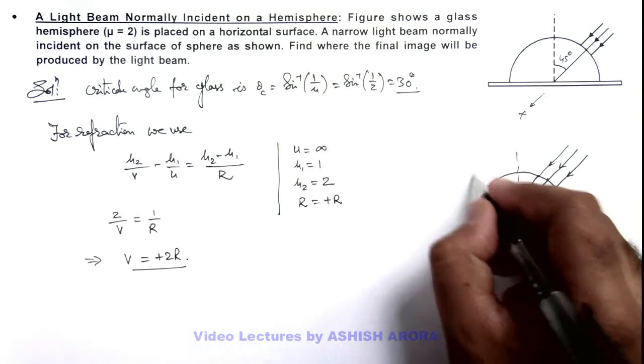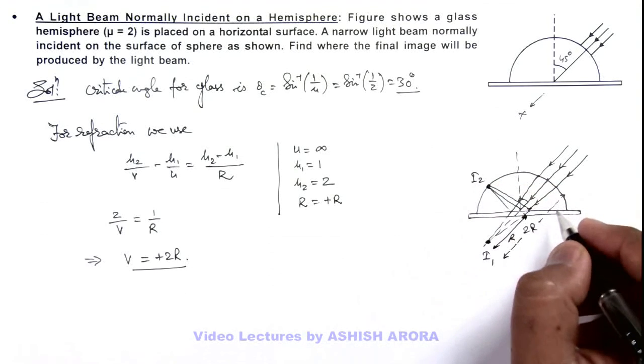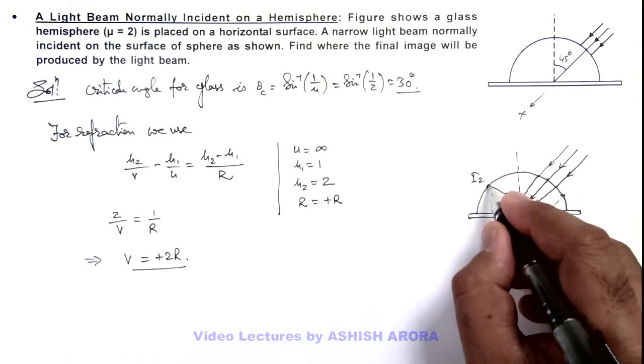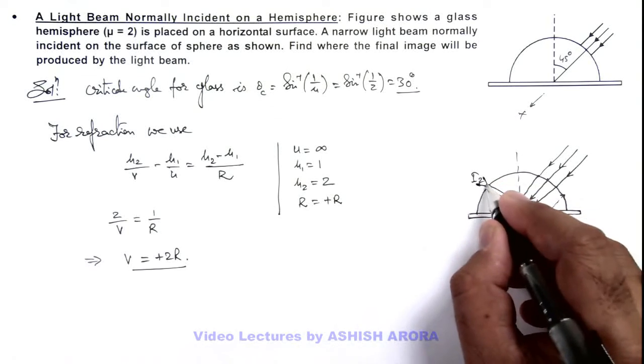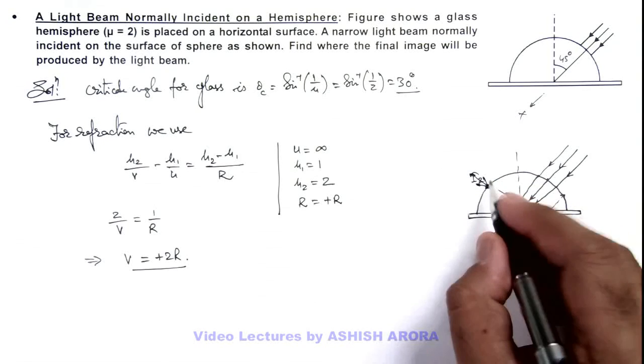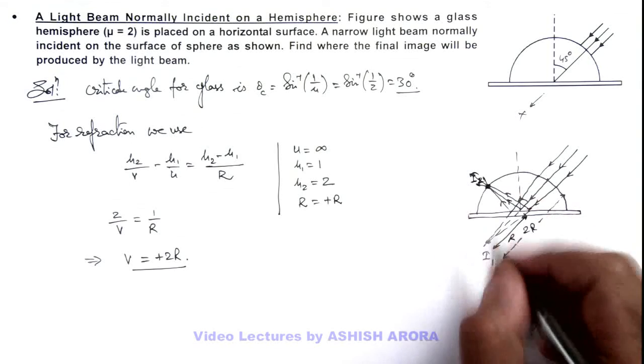The base of this hemisphere at the same distance—that means the light rays will be meeting at a point on the other face of this hemisphere. So this is the position of final image we can write as I₂. This implies the final image will be produced on the surface.